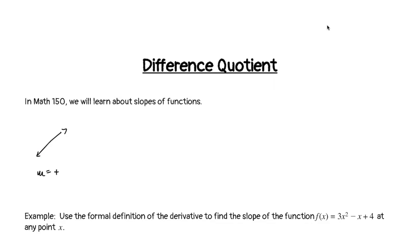What about if we had something like this? Tell me about the slope. This slope is zero. Tell me about the slope of this line. We could say that M is negative.